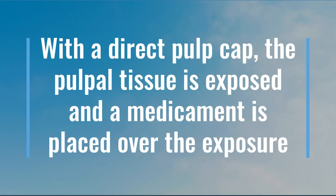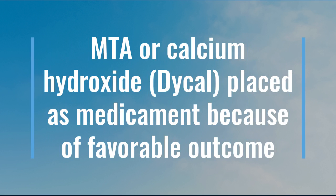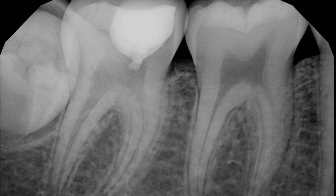The medication is placed in order to protect the pulp so that we don't need to proceed with root canal treatment. MTA or calcium hydroxide, which is Dycal, is placed as a medication because it has a favorable outcome.